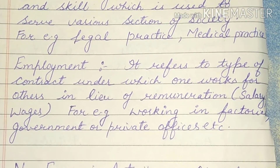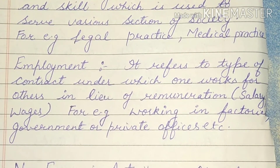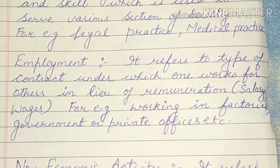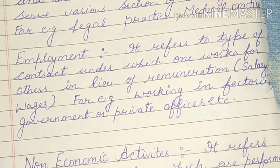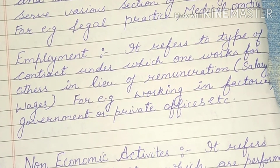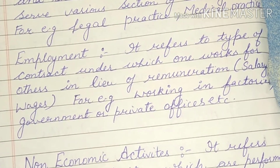She cooks food for her children out of her own happiness — she gets satisfaction when her children eat. Similarly, doing some social work or doing something good for society also comes under non-economic activity. For example, a person doing gardening at their own home — that is a non-economic activity.